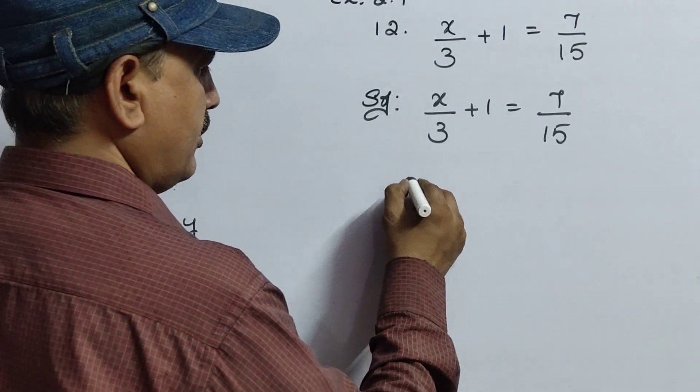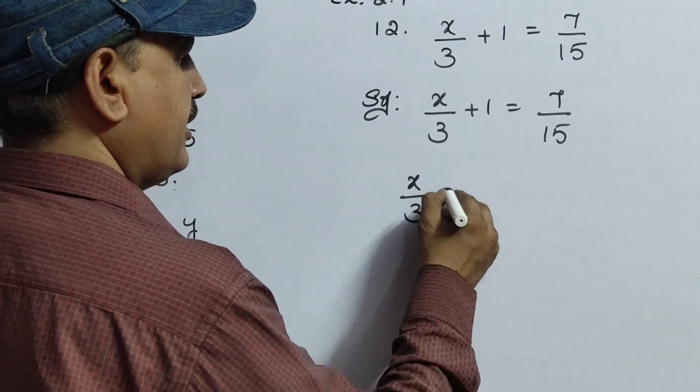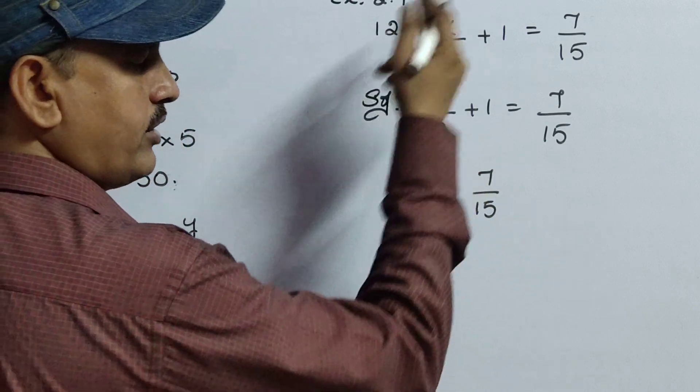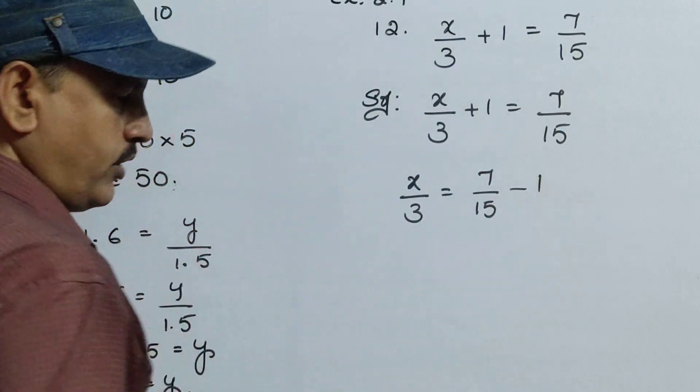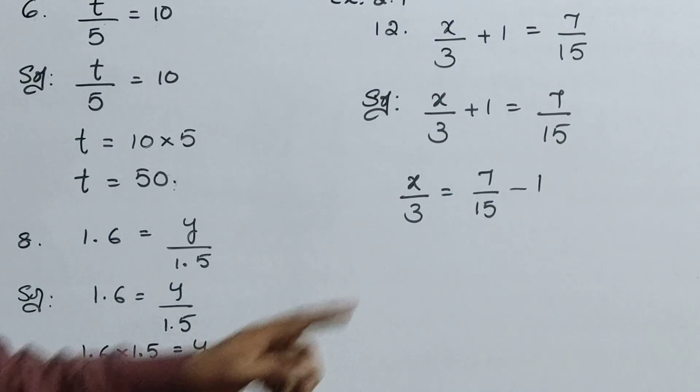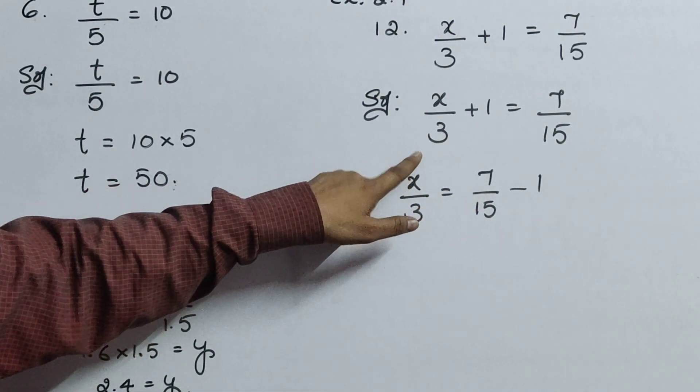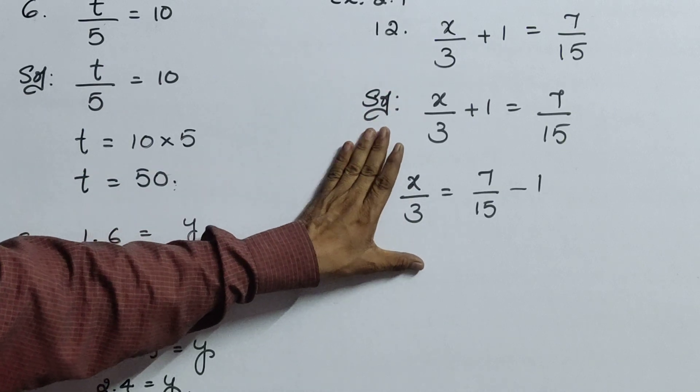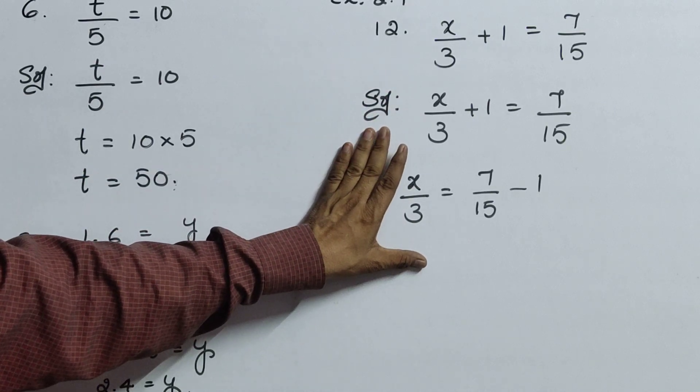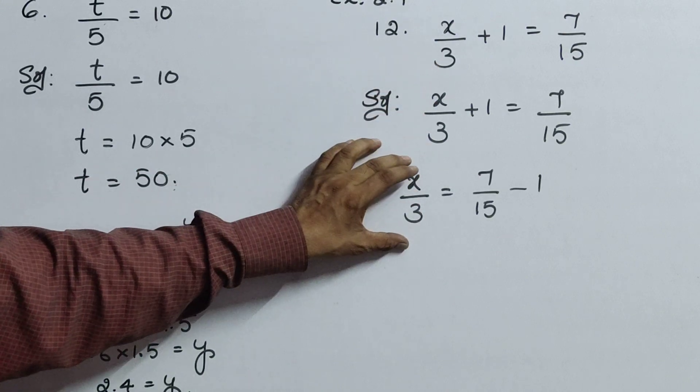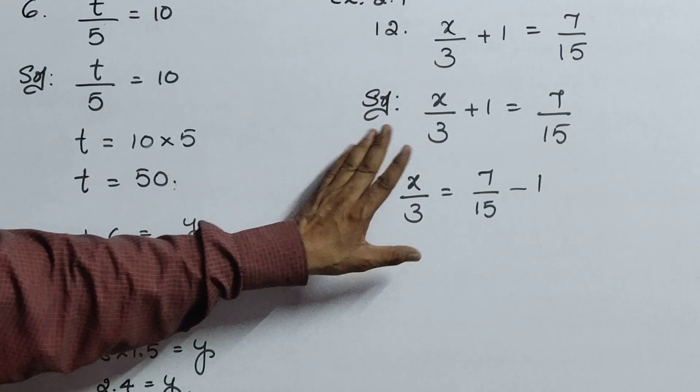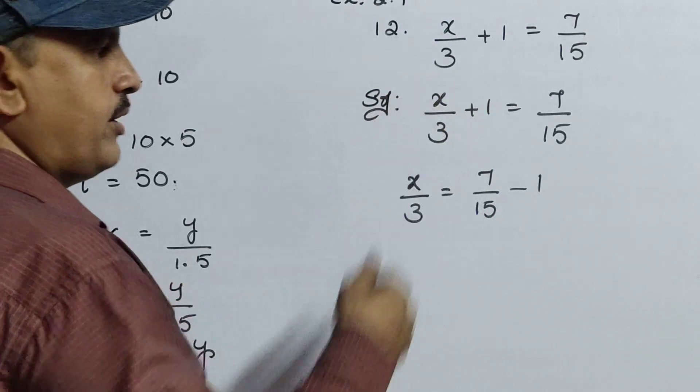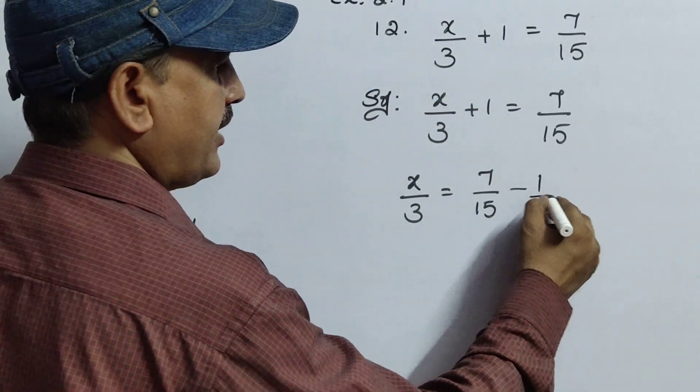Now x by 3 equals to 7 by 15. This plus 1 will go that side means it will become minus 1. Why? Because at that time you cannot send 1 and as well as 3. So what is related with x, keep that one along with x only. So plus 1 you just first send that side. Plus 1 will become a minus 1. Now find the LCM children.